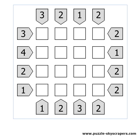The easiest starting point is if you find the highest possible clue. In a 4x4 puzzle like this, the highest possible clue is 4. This means that all 4 skyscrapers are visible from that spot. The only possible way is if they are ordered from the lowest to the highest.